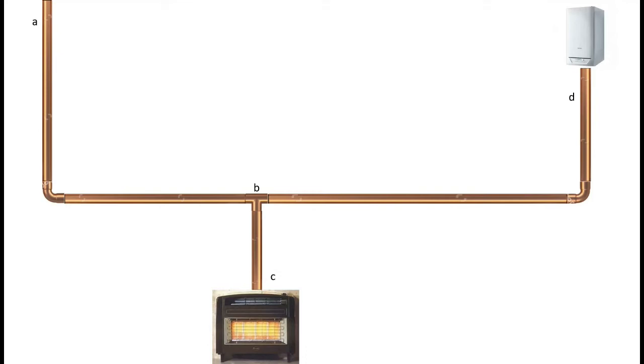We know from the previous lectures that we need to know how many meters cubed per hour the appliances demand. In this case, the boiler is 2 meters cubed per hour and the fire is 0.75 meters cubed per hour. That's the amount of gas they need to be able to operate properly. So we know that A to B needs to supply 2.75 meters cubed per hour.